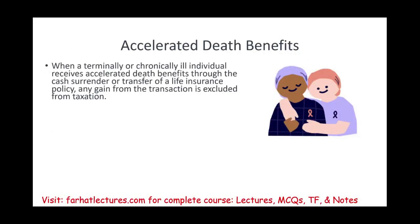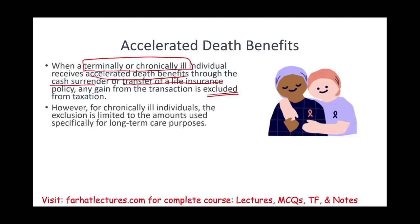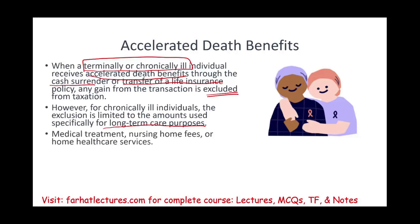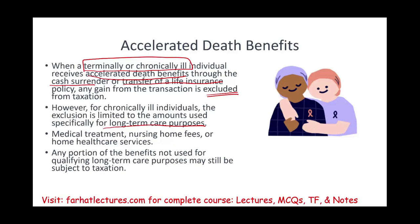Let's discuss accelerated death benefits. When the individual is terminally or chronically ill — meaning they have no chance of surviving medically in the near future — they can cash out the policy. An individual could receive an accelerated death benefit through the cash surrender or transfer of the life insurance policy, and any gain from a transaction like this is also excluded. You have to provide paperwork from your doctor that you are terminally or chronically ill, for example a cancer patient. However, for a chronically ill individual, the exclusion is limited to the amount used specifically for long-term care purposes — medical treatment, nursing home fees, or home health services. Any portion of the benefit not used for qualified long-term care purposes is subject to taxation.